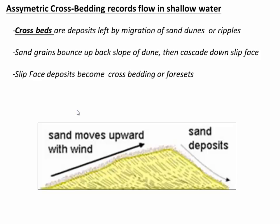So what is cross bedding? Cross beds are a type of sedimentary structure created by the movement of sand dunes or ripples. The way that sand dunes move is that grains of sand bounce along the back of the dune, and then enough sand builds up that you get a cascade of sand down the front. That's literally how a sand dune migrates — sand comes up the back and falls down the front.